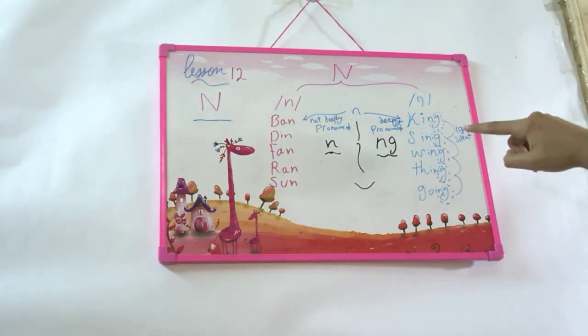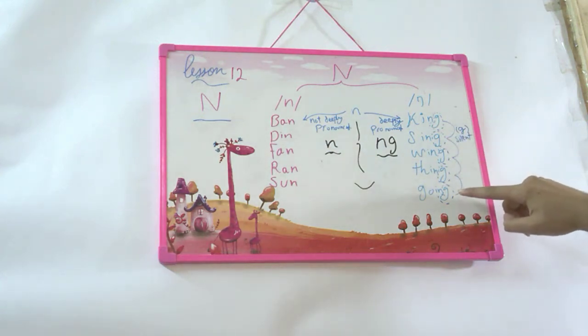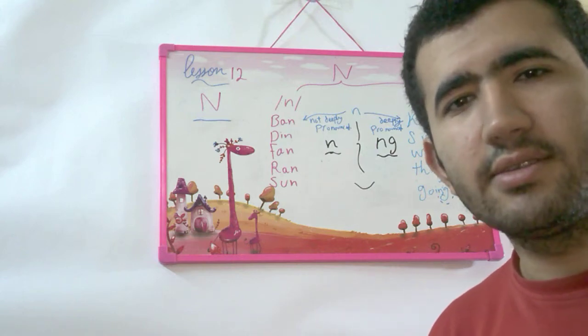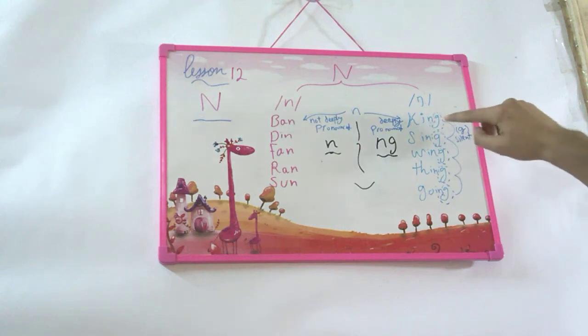king, sing, wing, thing, going. Remember NG, G is silent. That's why we stress the N here. Okay? We have G here and the G here is silent. So we stress the N.